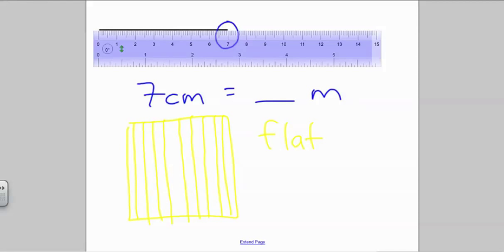These longs are then further divided into cubes, and each long has 10 cubes. You can see now that each long has 10 cubes in it. So this entire flat is actually made up of 100 small square cubes.